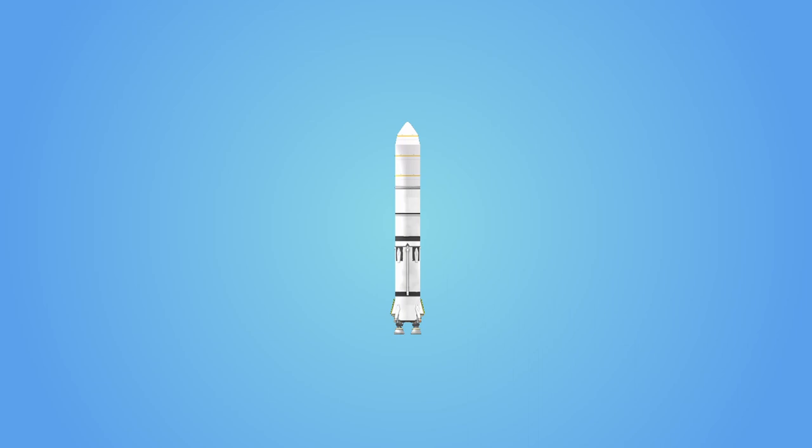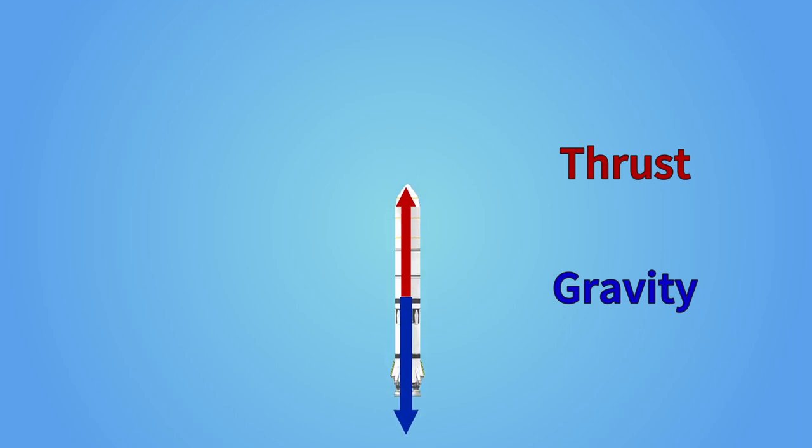In order to lift off, a rocket uses thrust to fight gravity. If gravity is stronger than the thrust, the rocket remains on the ground. If thrust becomes stronger than gravity, the rocket takes off.